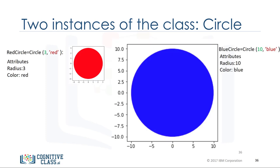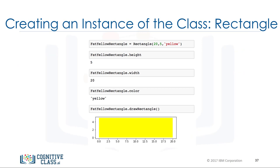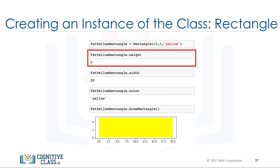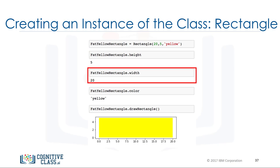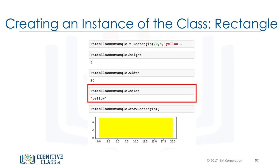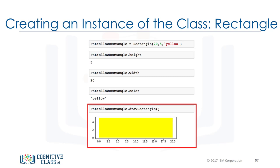In summary, we have created an object of class circle called red_circle with a radius attribute of 3 and a color attribute of red. We also created an object called blue_circle with a radius attribute of 10 and a color attribute of blue. In the lab we have a similar class for rectangle — we can create a rectangle object, access its height, width, and color attributes, and use the method draw_rectangle to draw the rectangle.